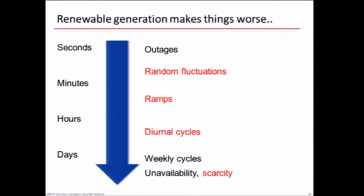Renewables make things worse because they introduce more random fluctuations. As François said, the wind and sun tend to change; they introduce ramps. If a front moves through a region with lots of wind power plants, that can suddenly decrease the amount of power produced. We have diurnal cycles not just in solar production but also in wind — in some parts of the world the wind blows more at night. And then we have periods of scarcity.